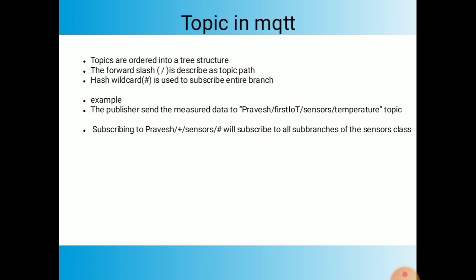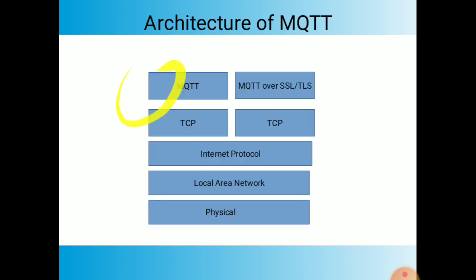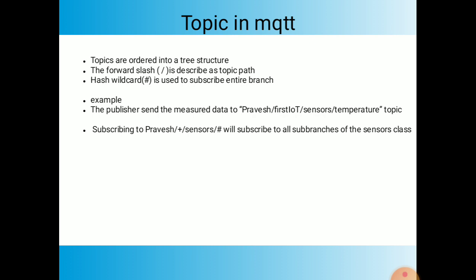The hash symbol allows you to subscribe to an entire branch. If you want all the data of a particular branch, you subscribe using the hash wildcard. For example, in MQTT the hash function selects an entire branch. Now I will give you an example of MQTT topics — how we publish data through a topic and how a subscriber subscribes to that data using the topic.